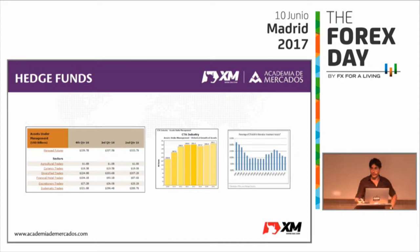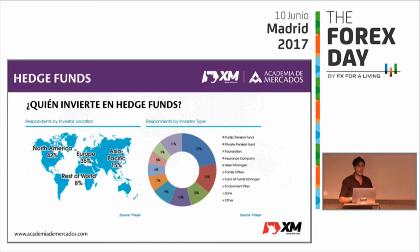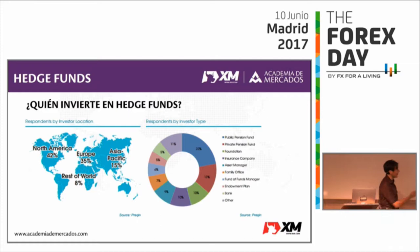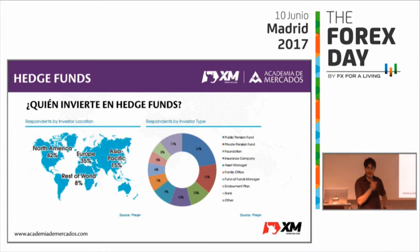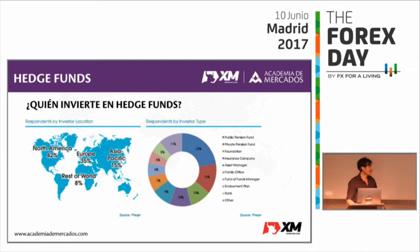Los principales inversores a nivel mundial son el mercado anglosajón: Estados Unidos con un 42%, Asia un 15% creciendo muchísimo, Europa prácticamente concentrado en Inglaterra, Suiza y Escandinavia. España e Italia, países latinos, muy poquito. Invierten fondos de pensiones privados y públicos, fundaciones, compañías de seguros, gestoras, family offices, fondos de fondos, universidades. Es un mercado enorme que existe desde hace mucho tiempo. Tiene bastante ventaja: es muy estable y te quita el riesgo de gestor y la subjetividad.